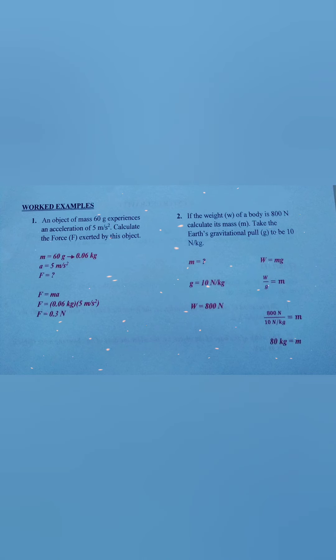Question two reads that if the weight of a body is 800 Newtons, calculate its mass. Take the Earth's gravitational pull to be 10 Newtons per kilogram. And likewise, we list the values. After listing the values, we pay keen attention to the units. Realizing that none of them has to be converted because they all exist in their SI unit form.